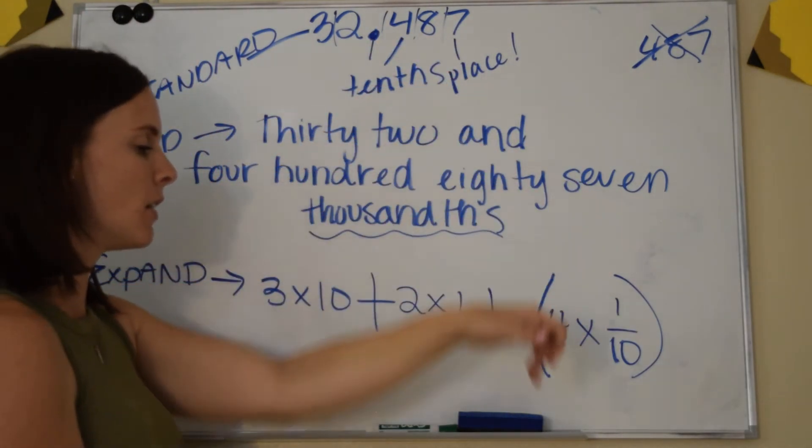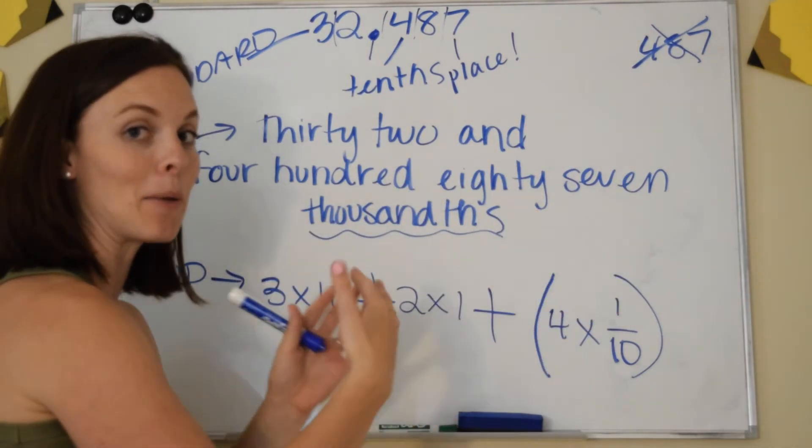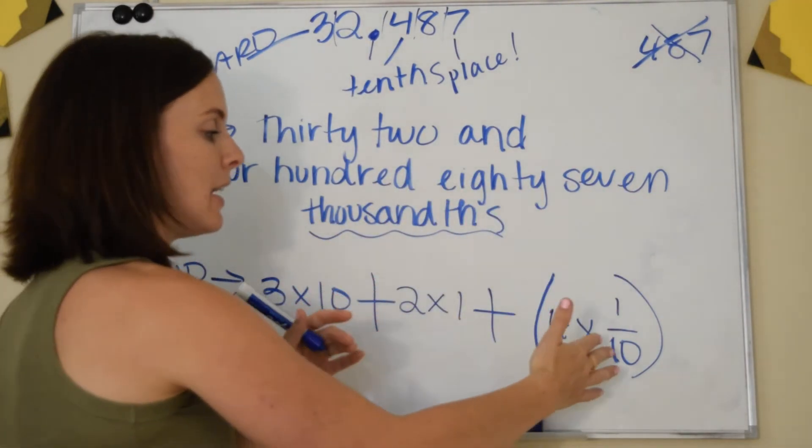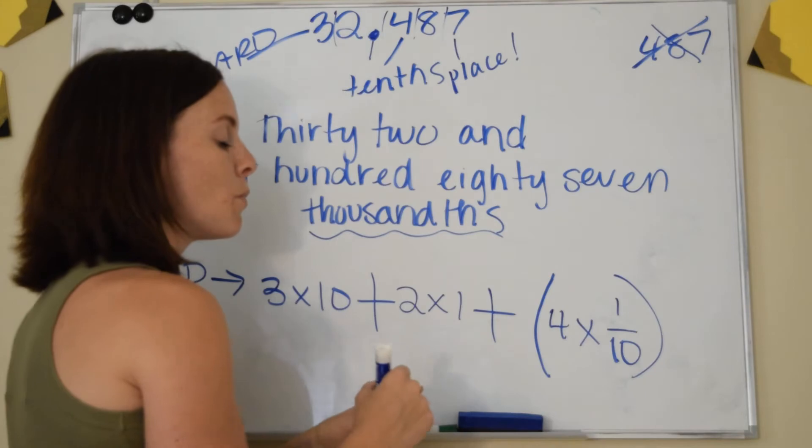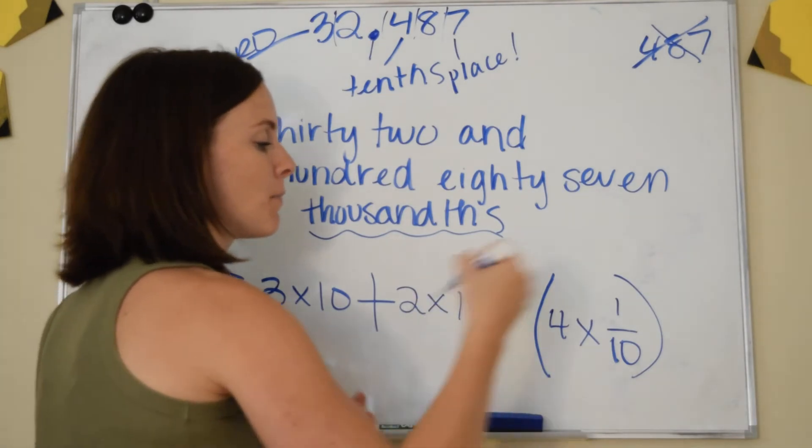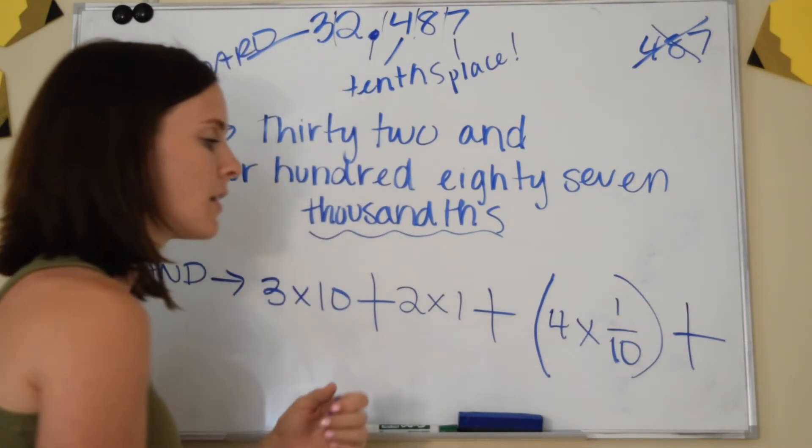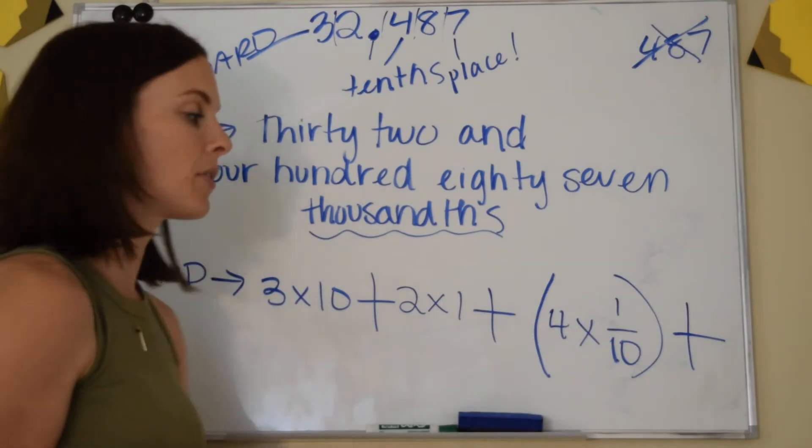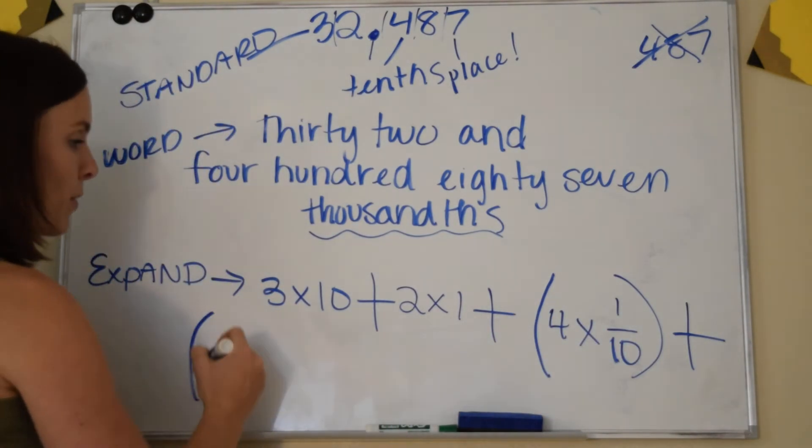Okay? And we expand it by multiplying it by the place. It's in the tenths. So we represent it again as a fraction. Let's go to the next one. Plus, notice I close the parentheses. So let's go to the next one. Add your parentheses.